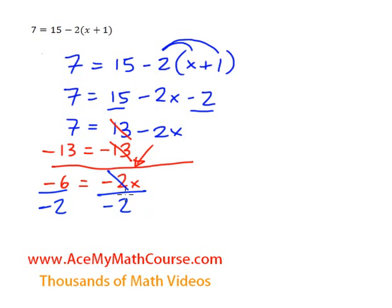Negative 2 divided by negative 2 is 1. So they cancel out. And so do the negatives. And negative 6 divided by negative 2 is 3. Positive 3 because negative negative makes a positive.